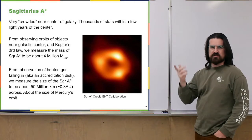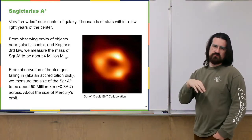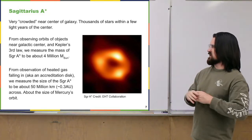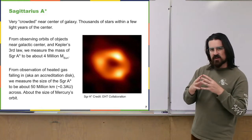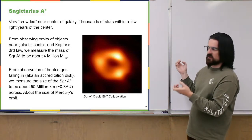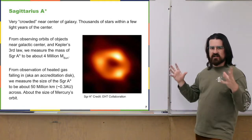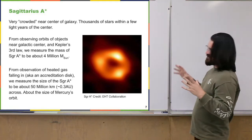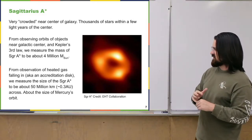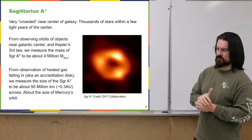Given the orbits of those objects and Kepler's third law — which relates orbital period to the masses of the orbiting object and the thing it orbits — we can assess that Sagittarius A* is about four million times the mass of our sun. This supermassive black hole is currently absorbing material, forming an accretion disk. The width of that disk allows us to estimate the size of the event horizon at about 50 million kilometers across, roughly the size of Mercury's orbit.